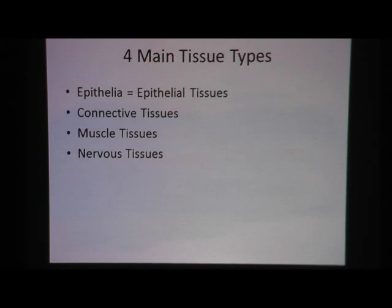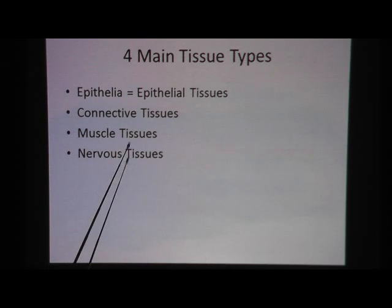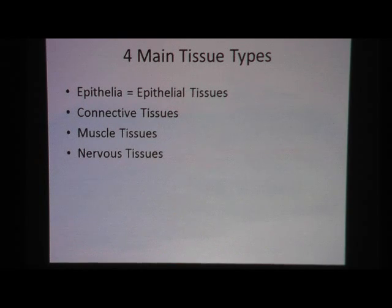Just a quick review: we have four main tissue types in the body — epithelial tissue, connective tissue, muscle tissue, and nervous tissue. We're going to talk about epithelial tissues right now.